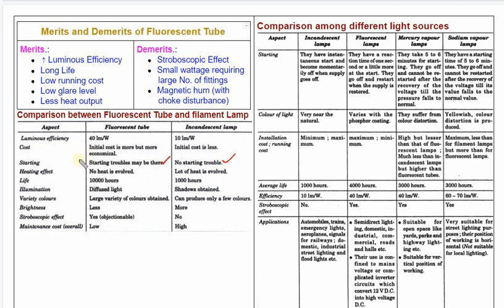The fluorescent lamp produces cool light, meaning the heating effect is low. It is a very practical and cool light suitable for daytime use. The fluorescent lamp has a life of around 10,000 hours.